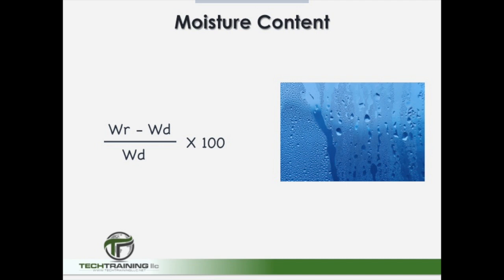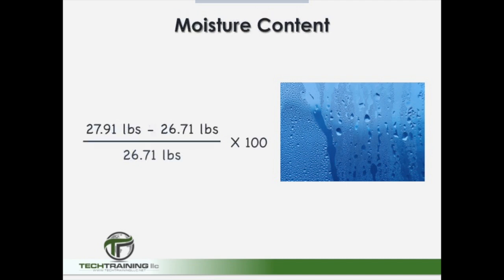A final calculation that is often requested is the moisture content of the unit as it was received. We take the weight received, WR, minus the oven dry weight, WD, and divide it by the oven dry weight. For our example: 27.91 pounds minus 26.71 pounds, divided by 26.71 pounds, times 100, gives us a moisture content of 4.5%.